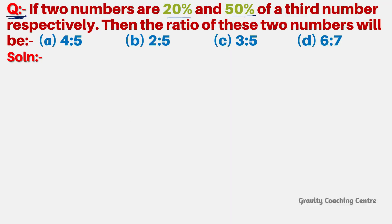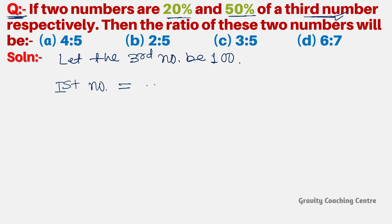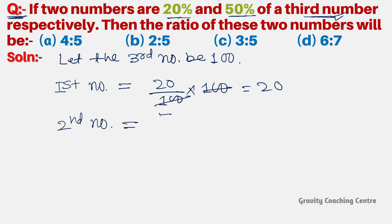If two numbers are 20% and 50% of a third number respectively, then what is the ratio of these two numbers? To solve this, let the third number be 100. So the first number is 20% of 100, which is 20, and the second number is 50% of 100.